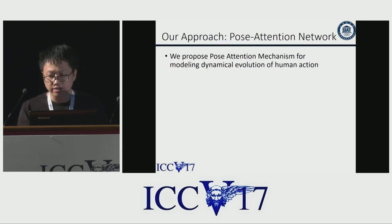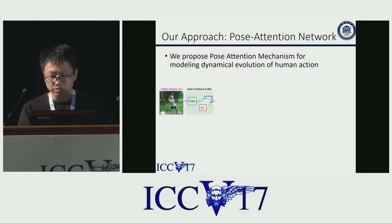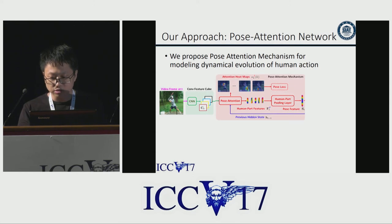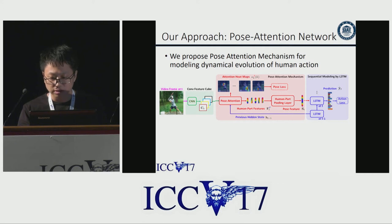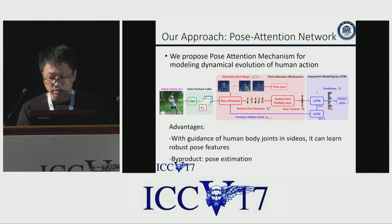Inspired by the above analysis, we propose a recurrent pose attention network to solve the problem. Our approach is mainly composed of three parts: first, a convolutional neural network; then the pose attention part, which is the key component of our network; and finally a recurrent network used for sequence modeling. With the guidance of human joints, it can learn robust pose features, and it also has a byproduct: pose estimation.